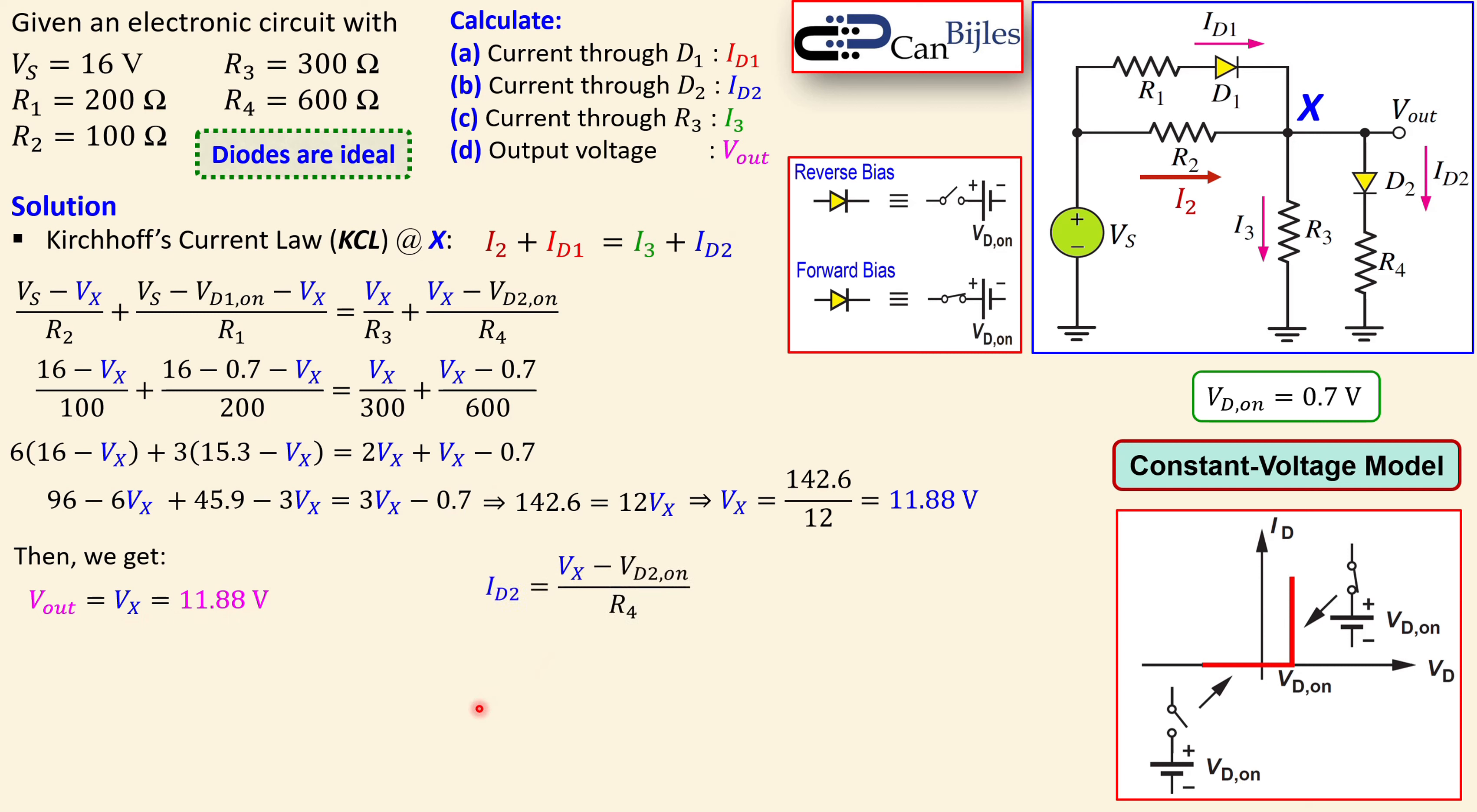ID2 can be calculated because since we know the Vx, we now have a lot of information in the circuit. We can say, as we set it already here in the expression, Vx minus VD2,on over R4. That will give me 18.6 milliamps. You always use Ohm's law and determine the voltage drop across the specific resistor and you know your branch current. Similarly for I3, that is Vx minus zero, which is Vx over R3, which is also Vout. So 11.88 over 300 gives me 39.6 milliamps.